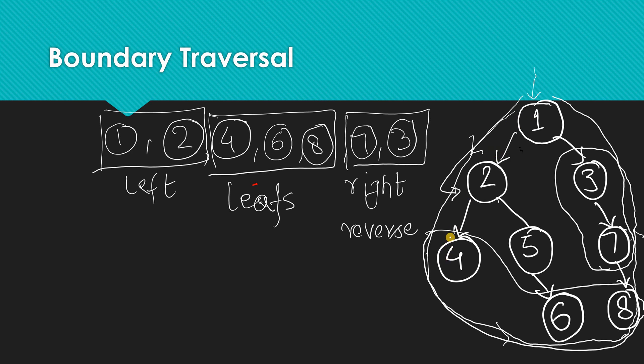If you've seen the previous videos, you already know how to print the left side of the binary tree, how to count and print leaf nodes, and how to print the right part. So I'd highly recommend you pause the video, try to write the code yourself, and come back only if you are stuck.